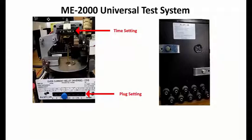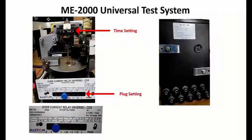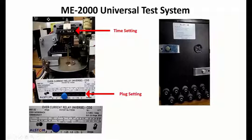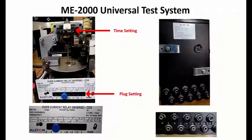Shown on the left side is the front view of the relay under test, which has a time setting and a plug setting. The plug setting display shows settings from 0.5, 0.75, 1, 1.25, 1.5, 1.75, up to 2 amperes. Above this is the plug setting multiplier, which shows the corresponding digit to be multiplied. On the right side is the back view of the relay, showing terminals 1 through 10 used to connect with the testing system.